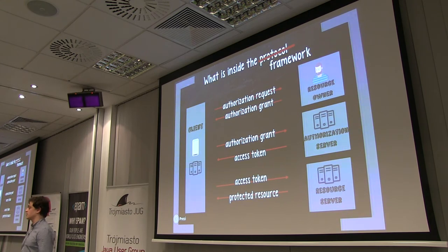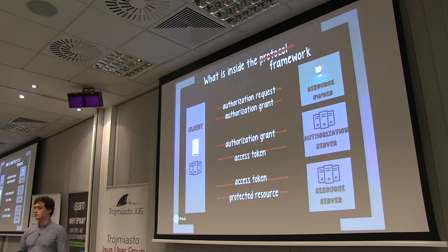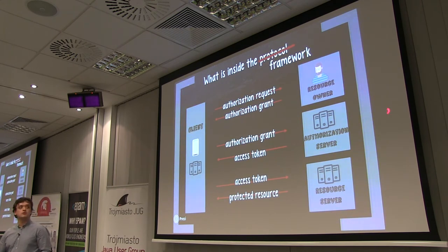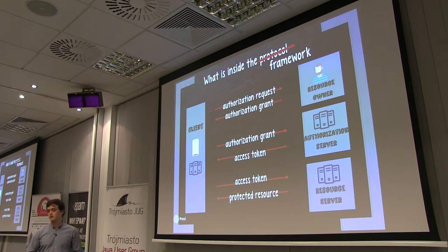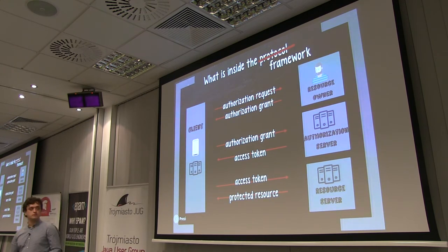The way it's implemented is through tokens. The user goes to the client and requests access to a protected resource. The client redirects the user to the authorization server — OAuth is only meant to be used with HTTP, so redirects are an essential part. The user logs in on the authorization server, which is the only entity that knows the username and password. The authorization server then issues an access token, which the client uses to access the resource server — performing actions on behalf of the user without ever having the credentials.